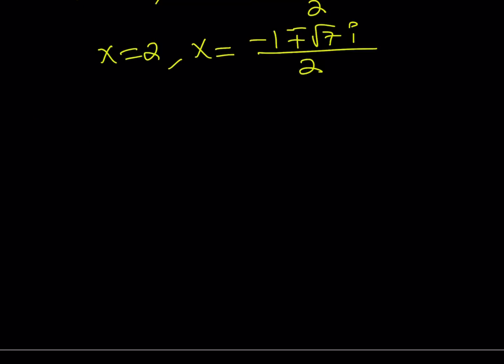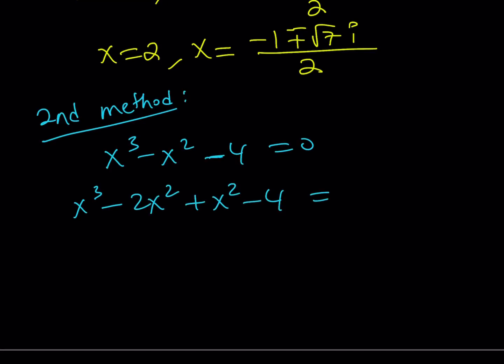My second method, first method involved breaking down the constant term, right? So let me rewrite my original problem. Now, the second method is going to involve breaking down the x squared. How do I break it down? I can write it as x cubed minus 2x squared plus x squared minus 4 equals 0.